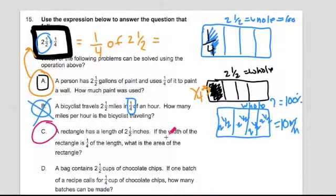A rectangle has a length of two and a half inches. If the width of the rectangle is one fourth the length, what is the area of the rectangle?